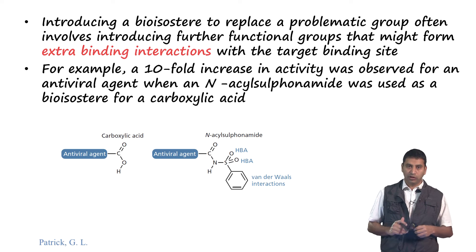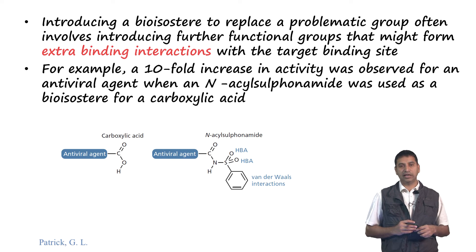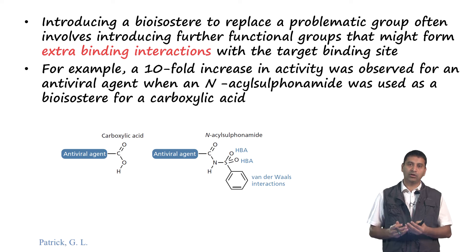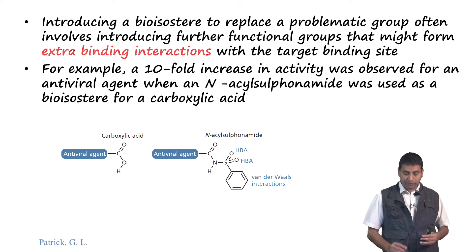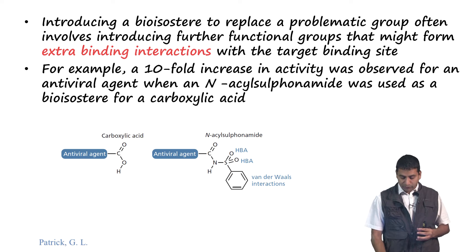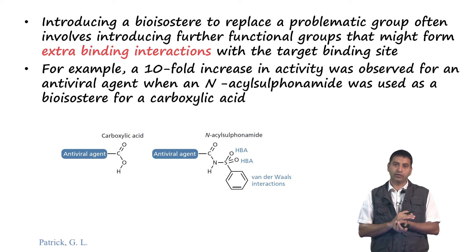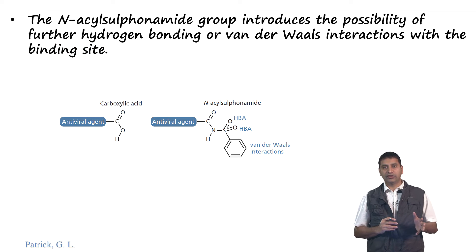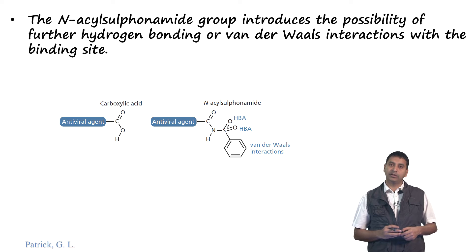For example, take an antiviral agent which has a carboxylic acid. By replacing this carboxylic acid with an N-acyl sulfonamide - a non-classical isosteer falling under the umbrella of bioisosteers - the N-acyl sulfonamide mimics the carboxylic acid in many respects. But it also introduces a new functional group for Van der Waals interaction, which as we know can be important in the case of aromatic rings. So the N-acyl sulfonamide keeps the hydrogen bonding intact while introducing new interactions with the binding site.